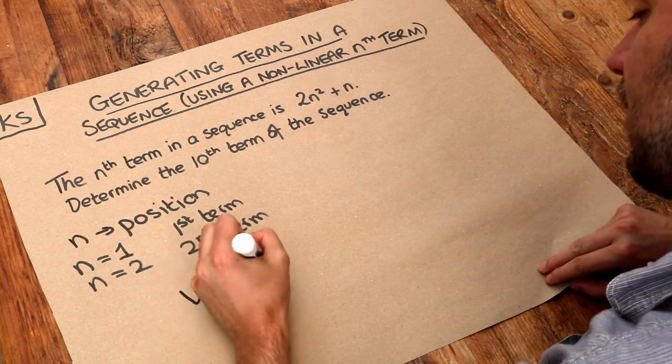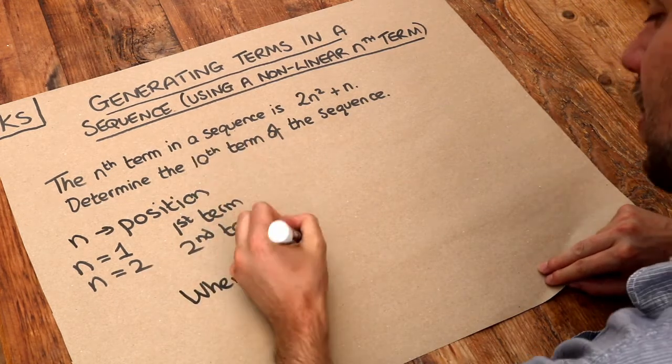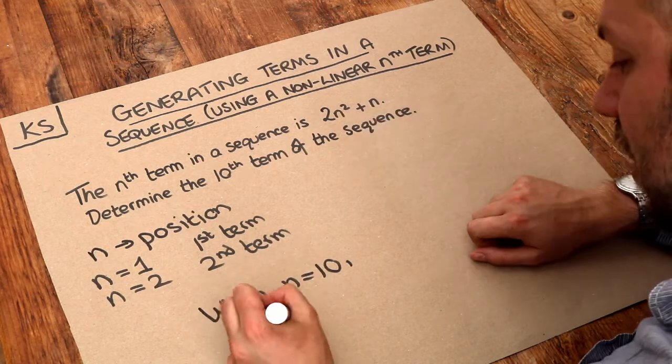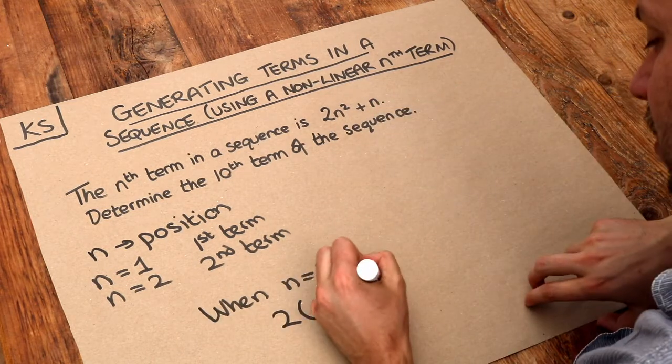So when n is equal to 10 to get the 10th term then we get 2 times 10 squared plus n, so plus 10.